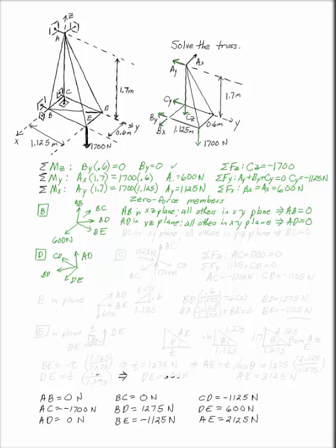At this point, we're just motoring along. If we go into the joint at C, you can say I'll have my reaction, 1125 newtons. I'll have BC. I'll have my other reaction, 1700 newtons. I'm going to have CD. And now I've got AC coming up. BC is in the XY plane. Everything else are in the YZ plane. So you know that BC has to be equal to zero. That's about it for your zero force members on this one.